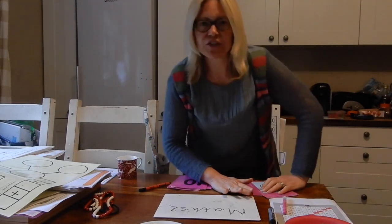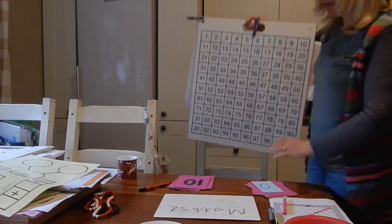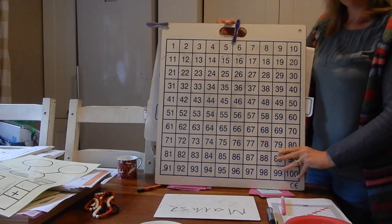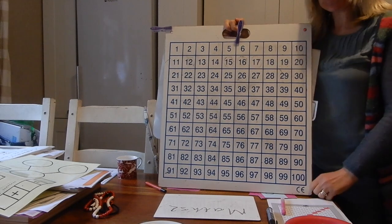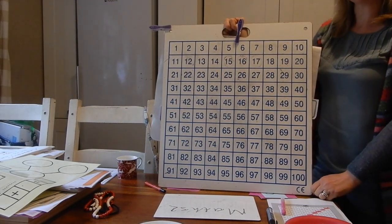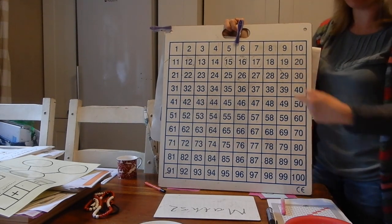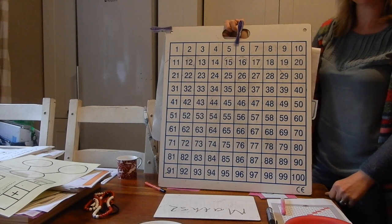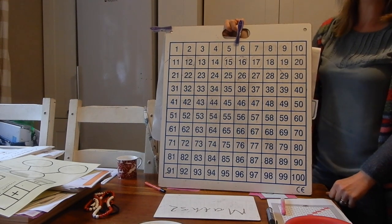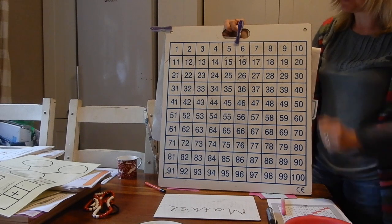Right, looking at our 100 square, I am going to call out some numbers. Hopefully you've got yours in front of you as well. I am going to call out some two-digit numbers and I want you to point to them on your 100 square. Or if you want to, you can point to it on mine on your screen.